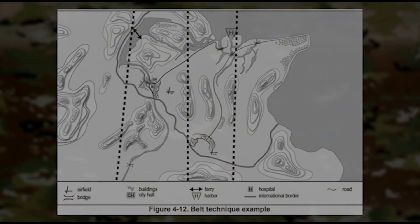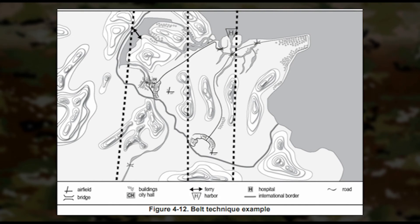Type 2: Belt. You divide your AO into areas running the width of the AO and shaped by your METT-C analysis. This method is effective if you are looking at terrain between clear features or obstacles, such as a ridge line or a set of rivers.